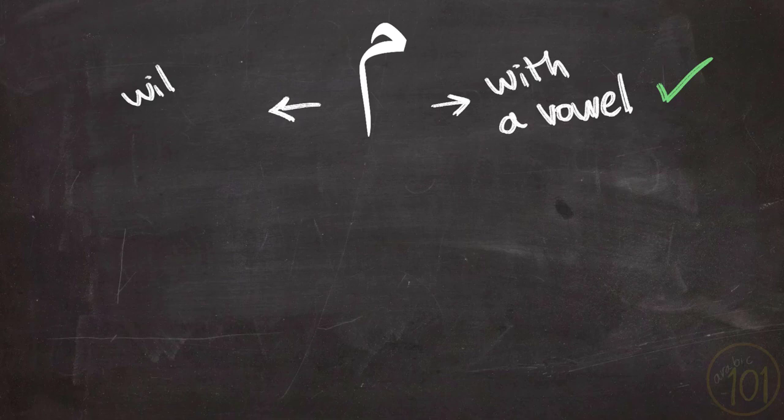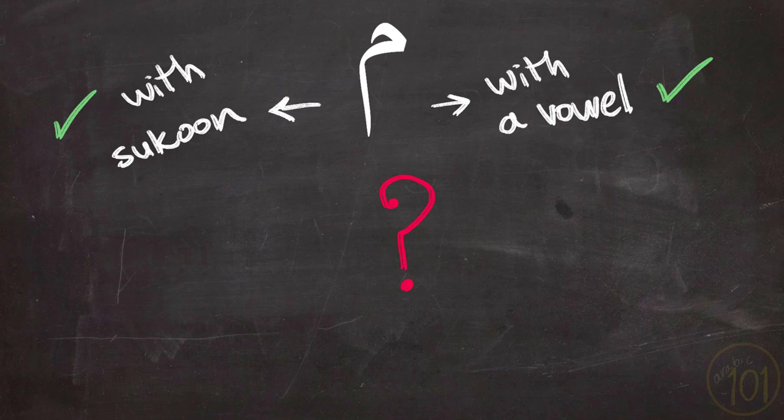So where is the problem then? The problem is that when the Meem Sakina, that is Meem that has Sukoon or no vowel, is followed by a Ba' or Meem, then you'll have to make some changes.